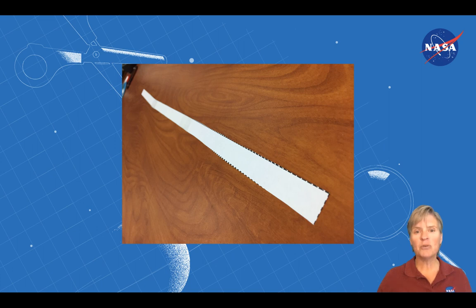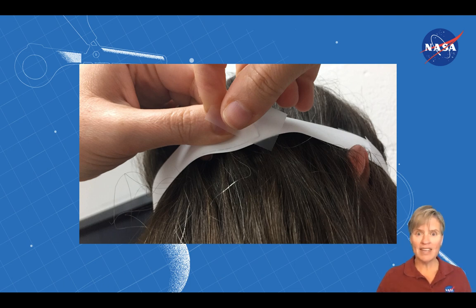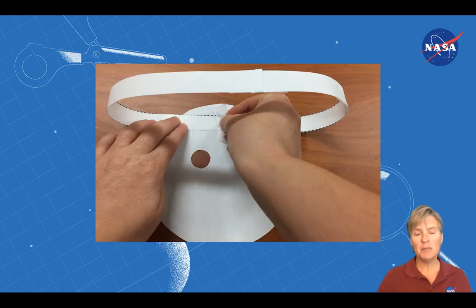Then tape those three pieces end to end. Then wrap those around your head and tape where they come together. Now that you have the headband, tape it to the back of your planet mask.